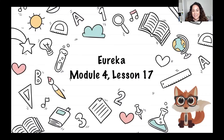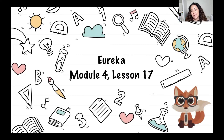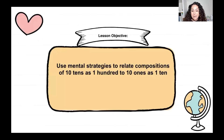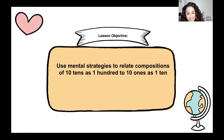Welcome back second graders. We are on Eureka Module 4 Lesson 17. Our lesson objective today is we're going to use mental strategies to relate compositions of 10 tens as 100 and 10 ones as a 10.